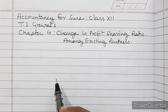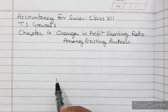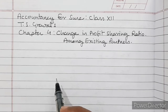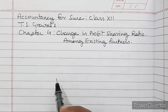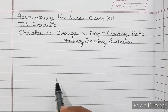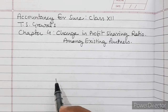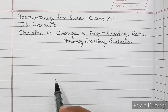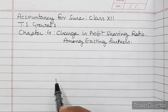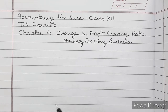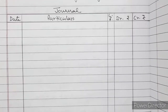The partners may decide to record the revised value of assets and liabilities in the books of the firm, or it may also be possible not to record the revised value. Let us discuss when the partners have decided that the revised value of assets and liabilities is to be recorded in the books of accounts.